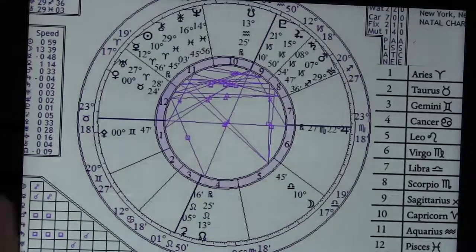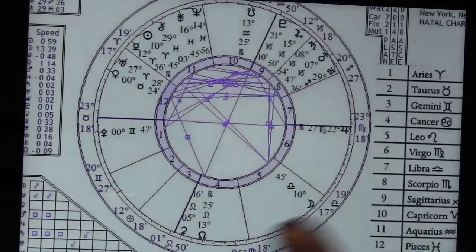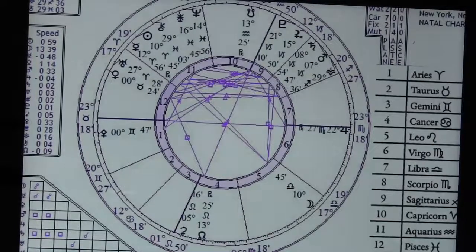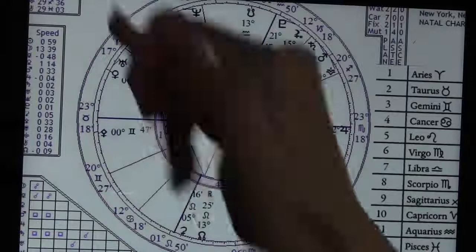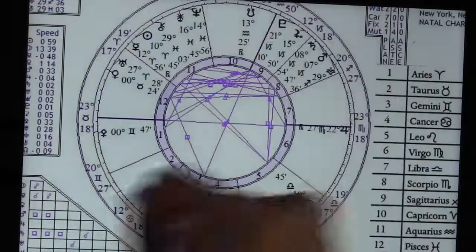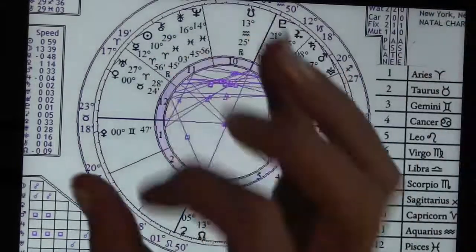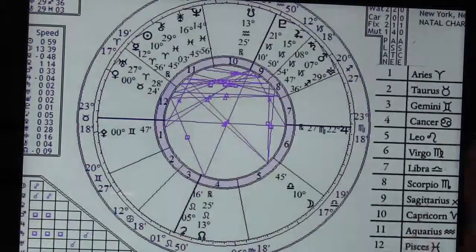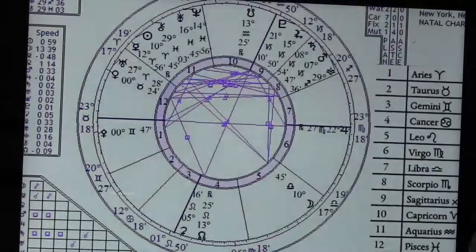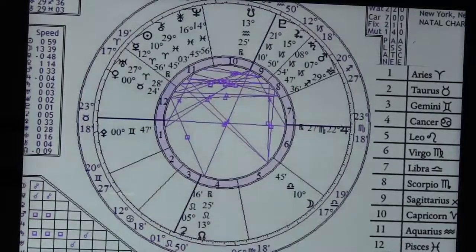The missing element to make this all four cardinal signs and a big grand cross is the element of Cancer. And in 1915, we had Saturn, Neptune, and Pluto in Cancer. Speaking of the cardinal signs, we've just moved into the cardinal ingress. There's four times a year we change season.